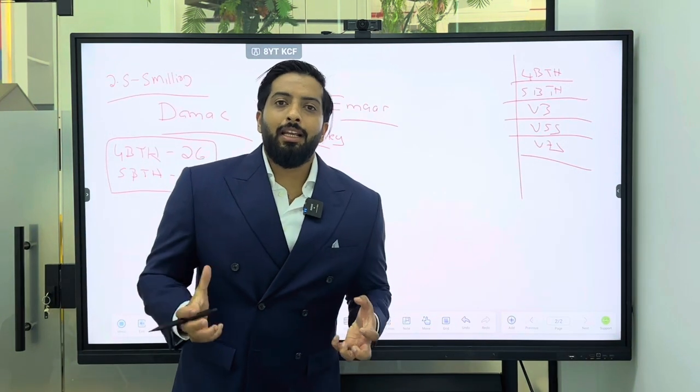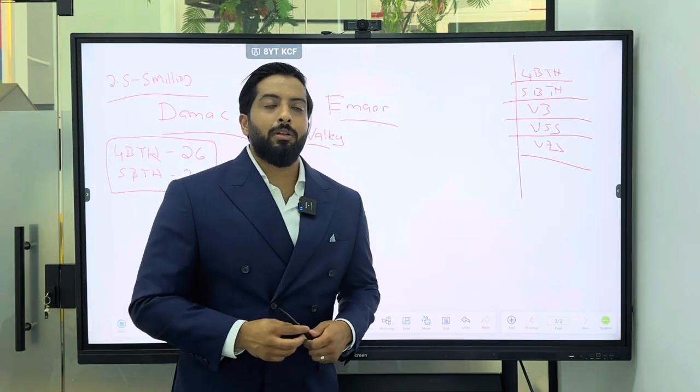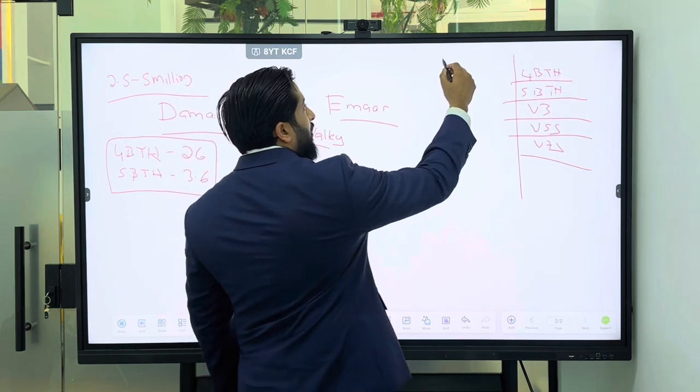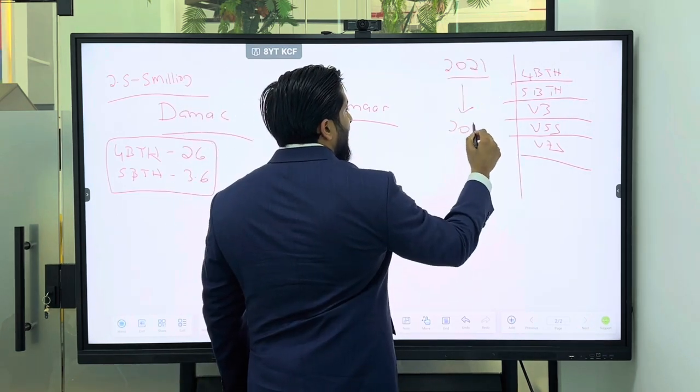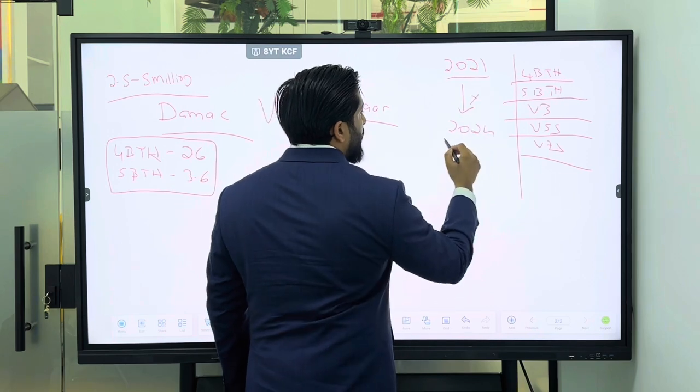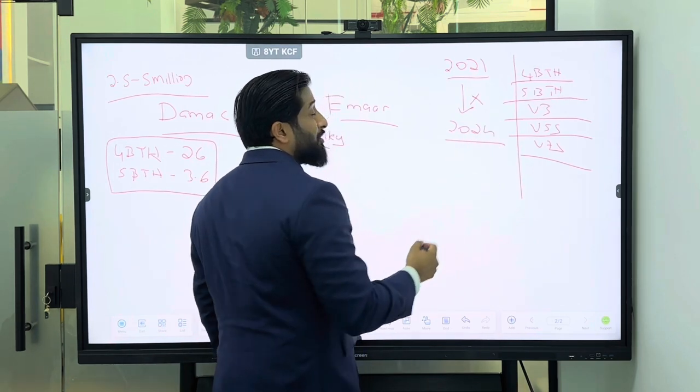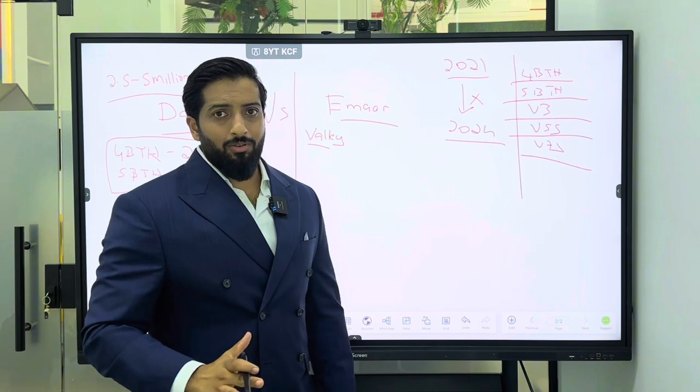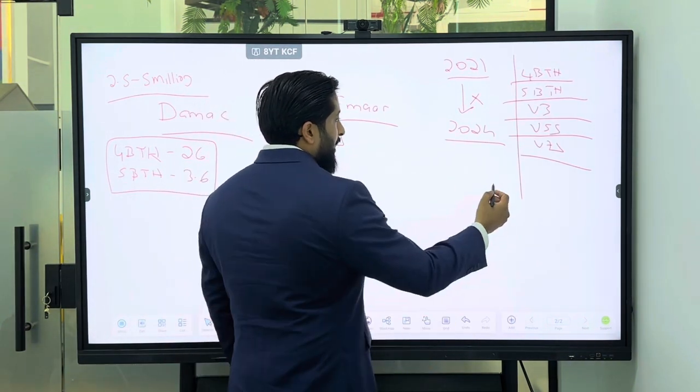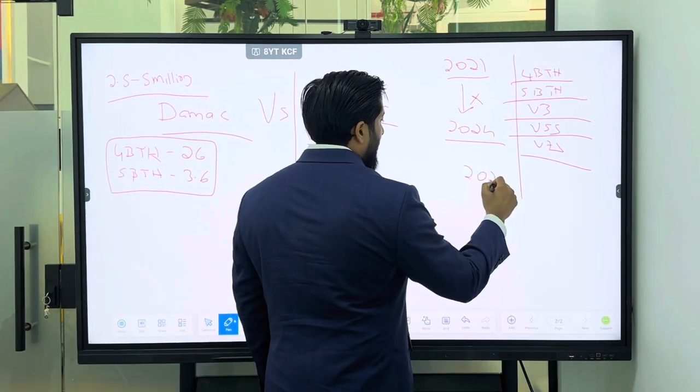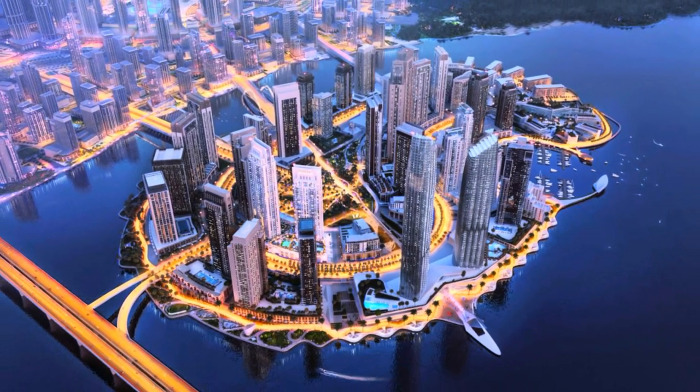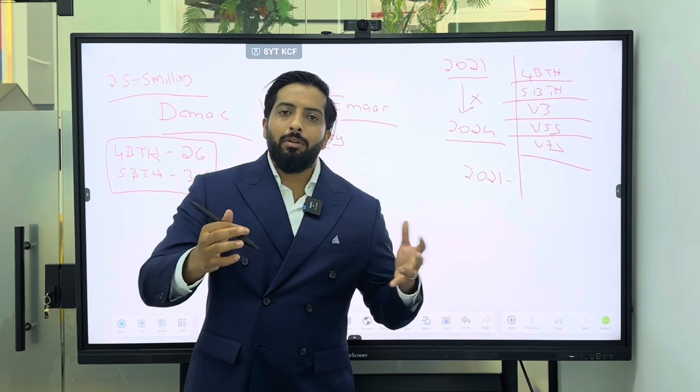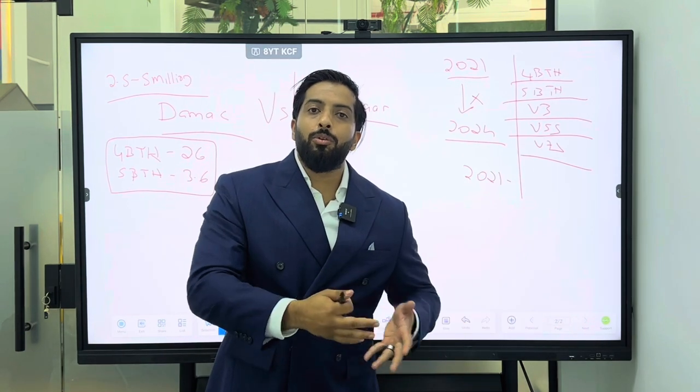One thing I hate nowadays - a lot of people compare, 'Hey you know what, 2021 we bought this, so now the price is X, so that is why you should invest now.' It's just not the same trajectory. It's a different trajectory.